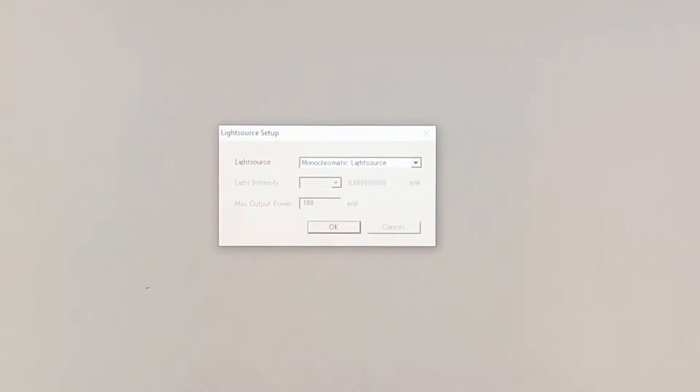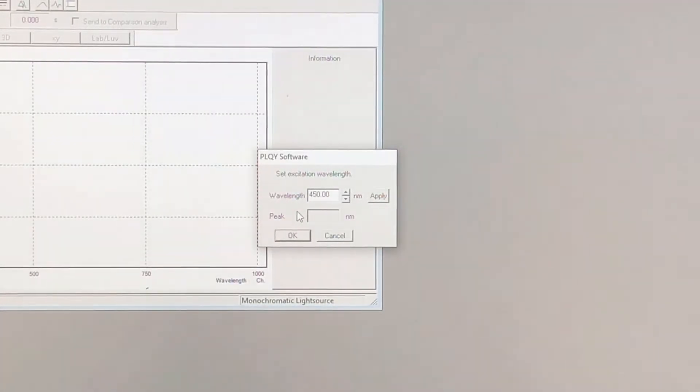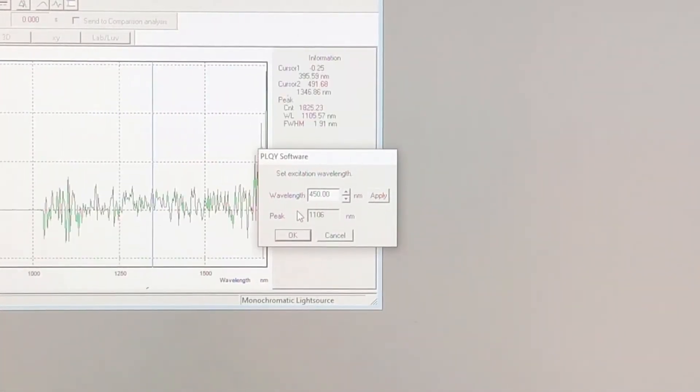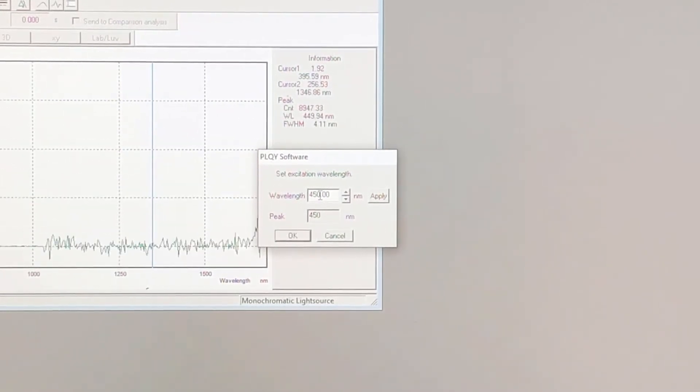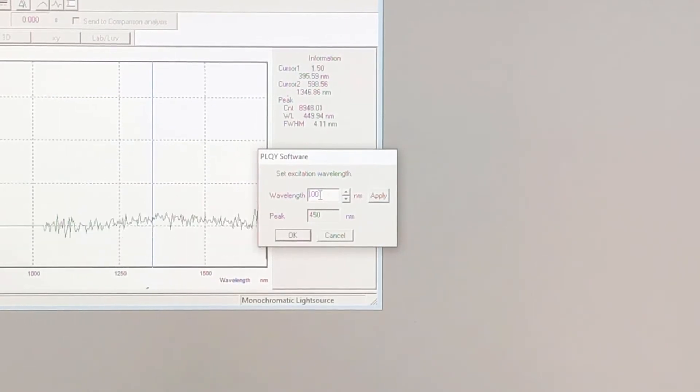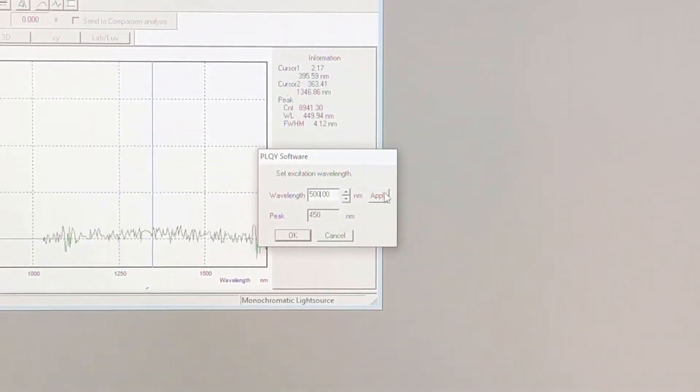Let's load up the software. We'll choose the monochromatic light source and select single scan. When it asks for the excitation wavelength, we'll use 500 nanometers, which is near the absorption peak for our material. Remember to hit apply before selecting ok.